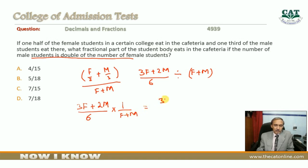So this will be (3F plus 2M) over (6 into F plus M). Now we apply the condition that male students is double the female students. This means that M is equal to 2F.